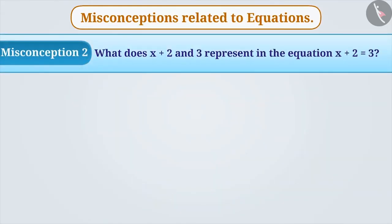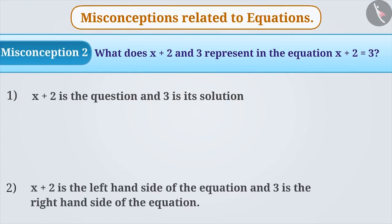Misconception 2: What does x + 2 and 3 represent in the equation x + 2 = 3? Option 1: x + 2 is the question and 3 is its solution. Option 2: x + 2 is the left-hand side of the equation and 3 is the right-hand side of the equation.